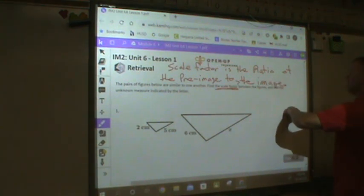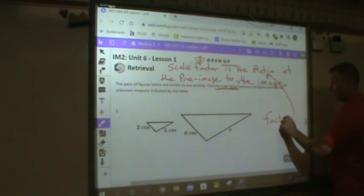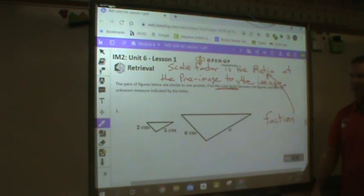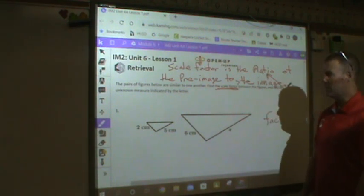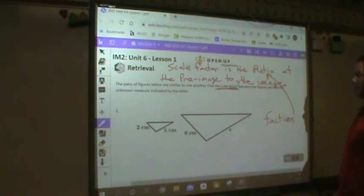A scale factor is the ratio of the pre-image to the image. Okay, so what is a ratio? You're going to go, gee, what's a ratio? A fancy word for ratio is fraction. You've seen fractions your entire life in school. I got a 3 out of 5 on a quiz. I got a 37 out of 40 on a test. Those are ratios, right? You've seen those all the time. So a scale factor is a ratio.